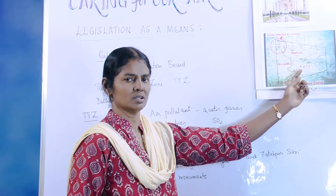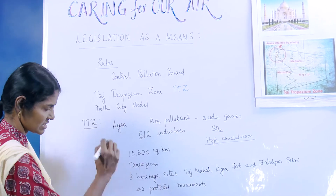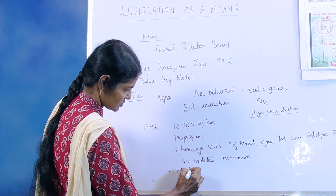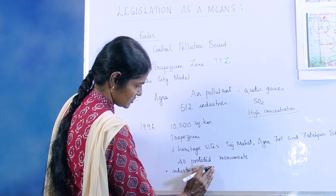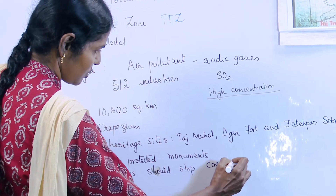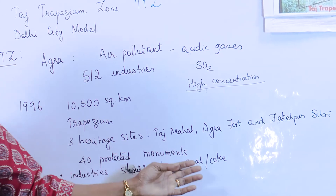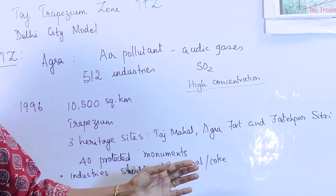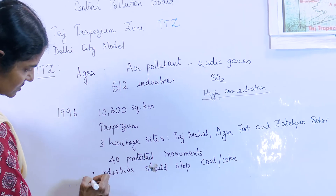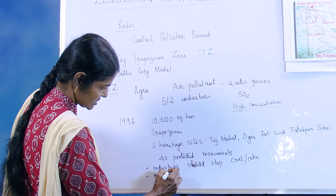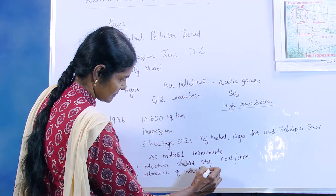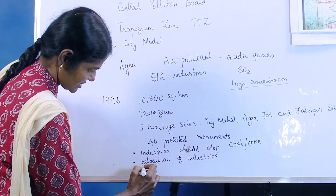Having drawn this trapezium zone, three important points were established. One: industries should stop usage of coal or coke, because coal and coke contain a fairly large amount of sulfur — when they are burnt, sulfur dioxide is emitted. Two: relocation of industries which are in or very close to this area. Three: creating a green belt around the Taj Mahal.